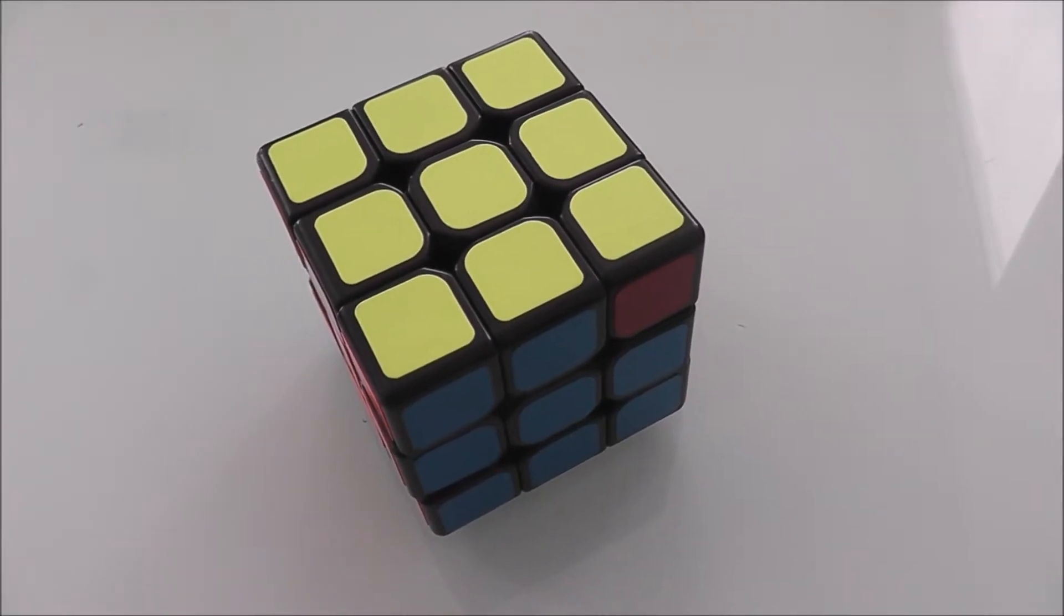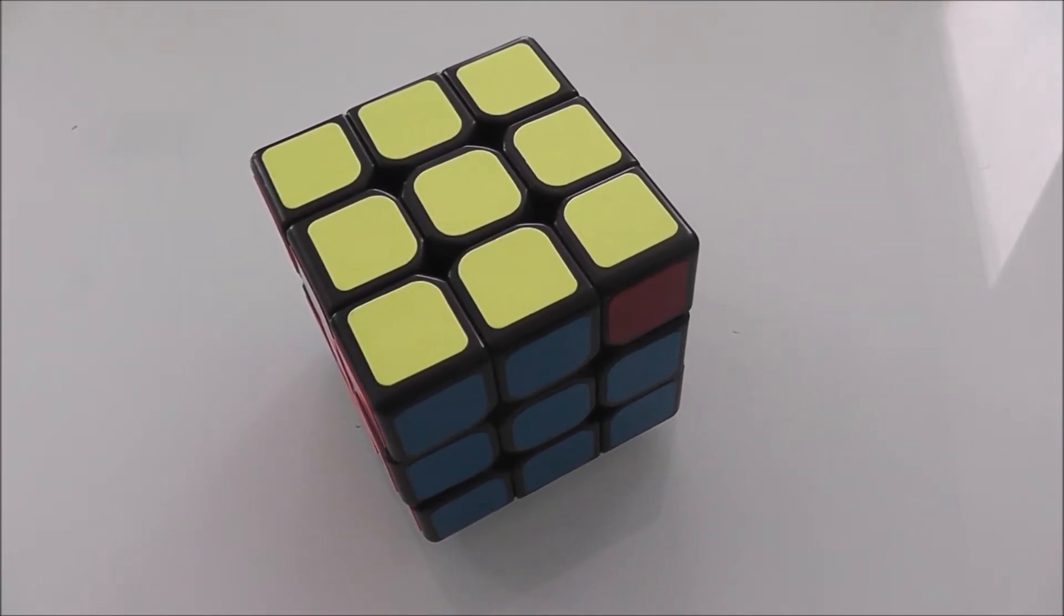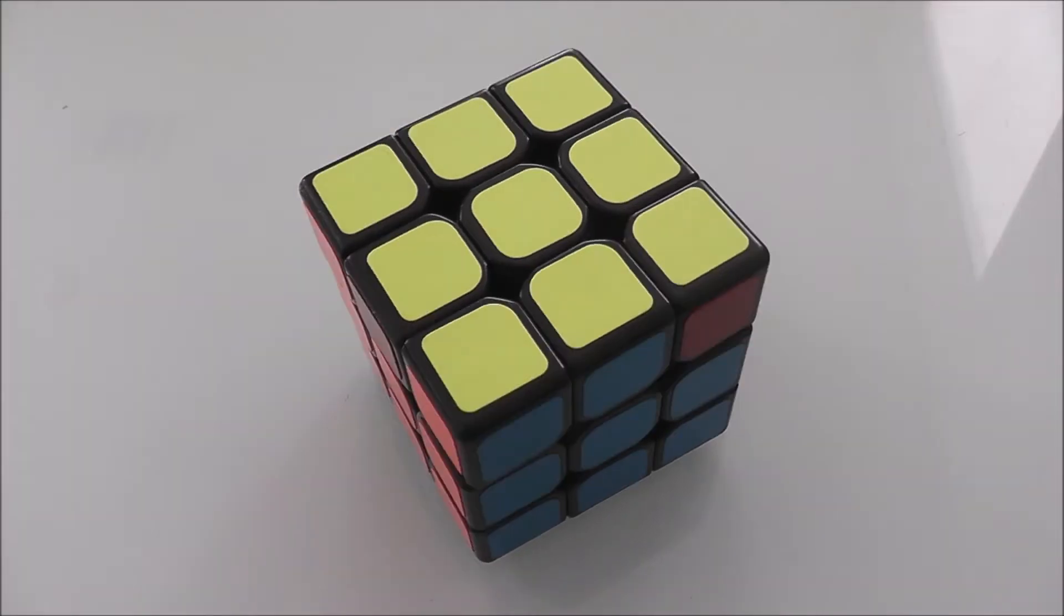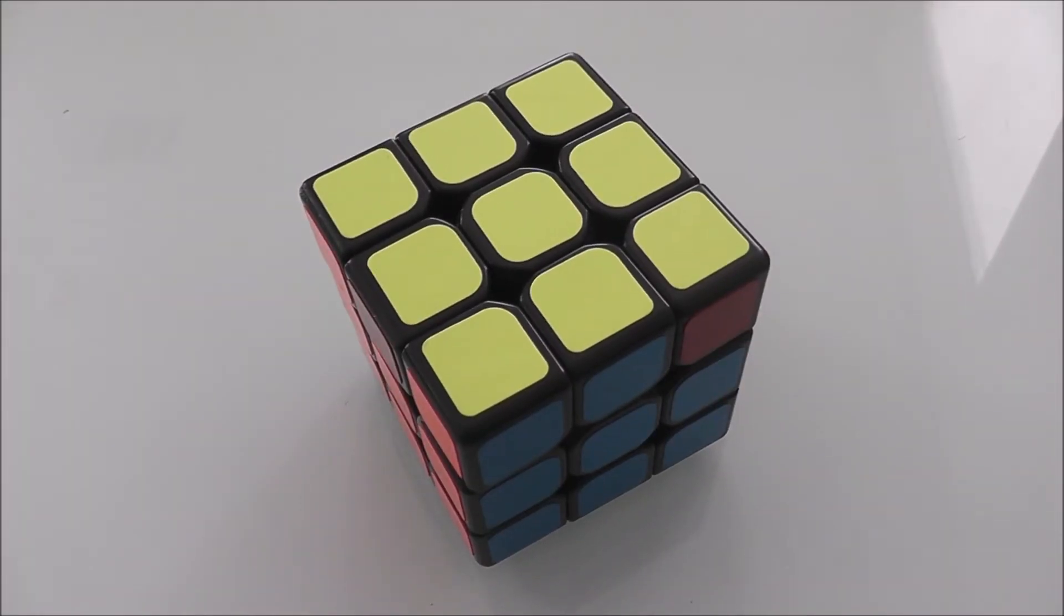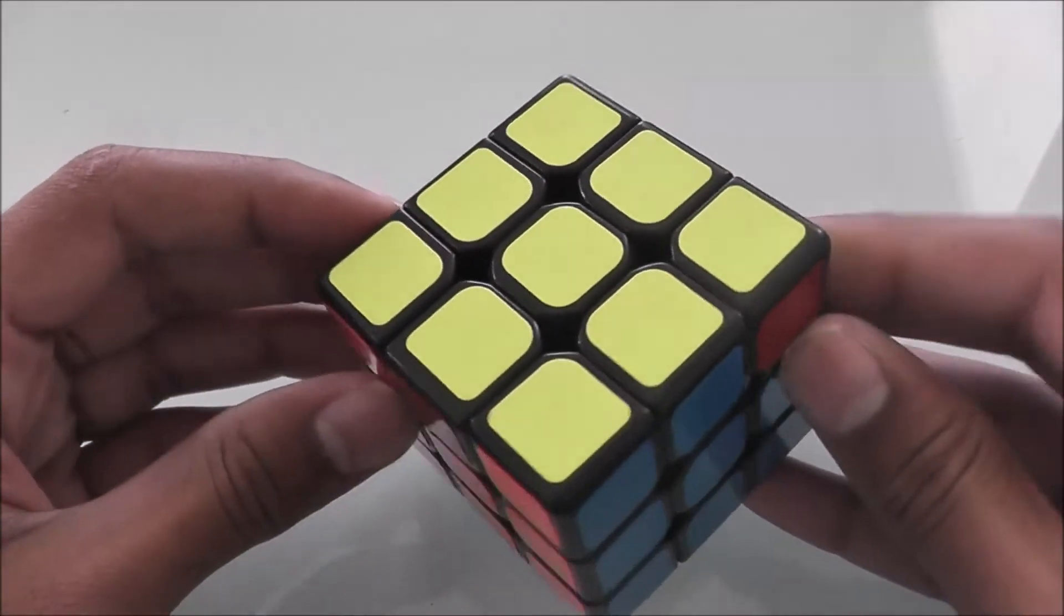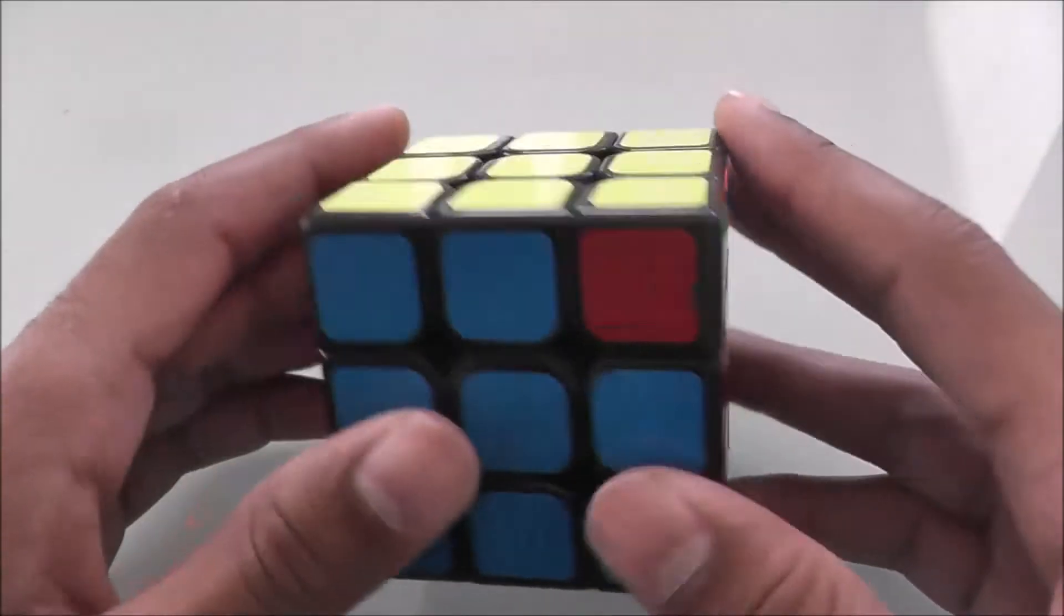Hey guys, what's up? This is Twisted Corners, and in today's video we're going to be learning how to do the orientation of the last layer. Basically, what the orientation of the last layer is, is when you complete the entire yellow face. As you can see here, I've completed the entire yellow face, thereby orienting the entire last layer. The next step would be to solve this entire top band.